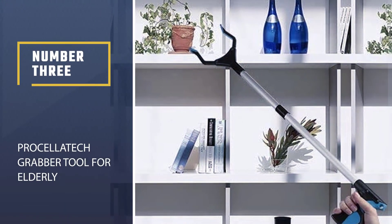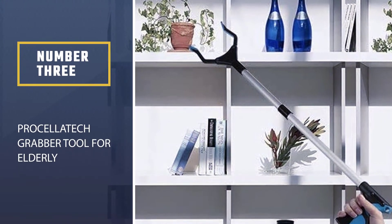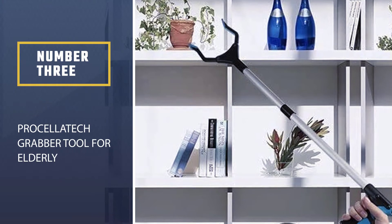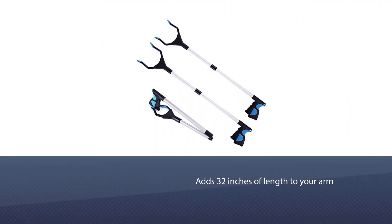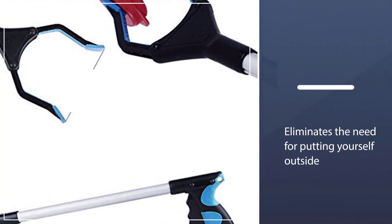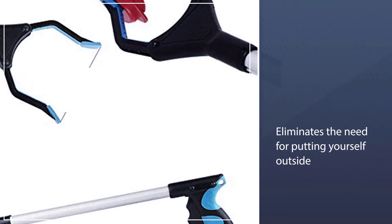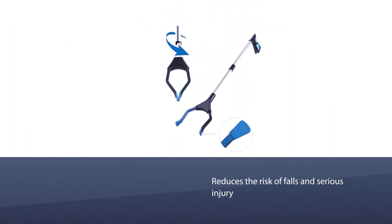Number three, Procellatech Grabber Tool for Elderly. The Procellatech two-pack reacher grabber pickup tool adds 32 inches of length to your arm to help you grab things that are out of reach or tucked in hard to reach places. It eliminates the need for putting yourself outside of your comfort zone to pick up things and it also reduces the risk of falls and serious injury.